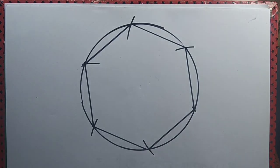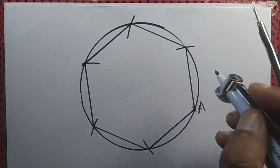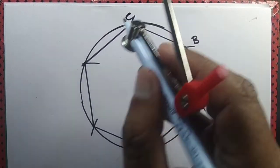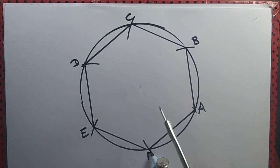And so we have drawn a regular hexagon. Let us label it: A, B, C, D, E, F.